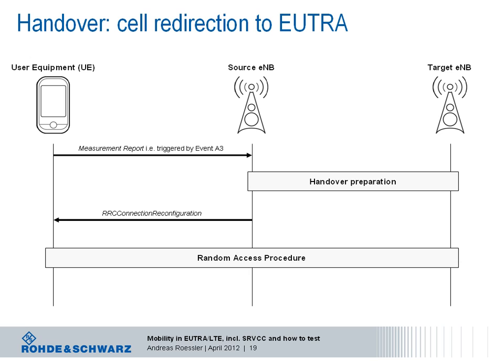After receiving the RRC connection reconfiguration message from the source eNodeB, the device starts timer T304 — the handover-to-EUTRA failure timer — and initiates the random access procedure to the target cell. It can do that because it doesn't need to acquire any system information, since the essential information to execute the random access procedure is part of the RRC connection reconfiguration message. After successful completion of the random access procedure, the device stops T304 and sends the RRC connection reconfiguration complete message to the target eNodeB.